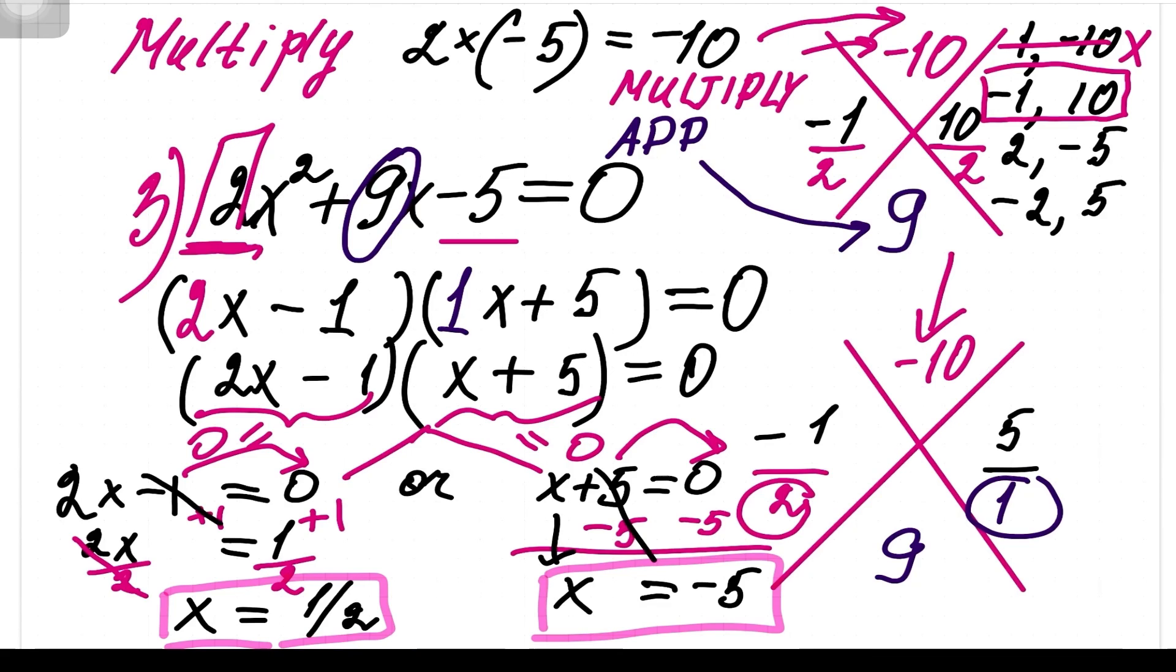So always you end up getting 2 answers. You could also check them out by substituting them back into your original equation and see if it works. Now also, you can check out your factorization by multiplying and foiling everything out. Thank you.